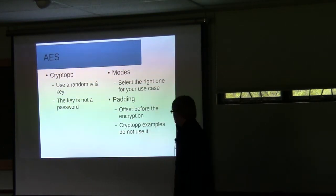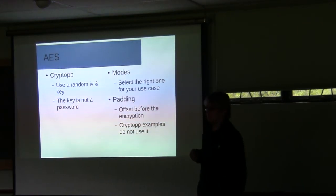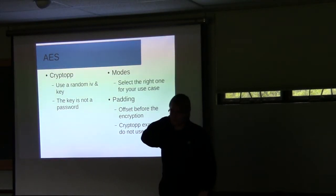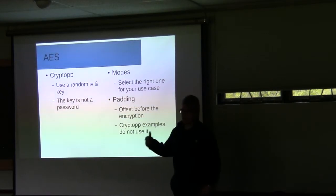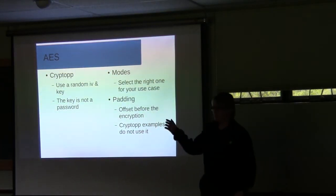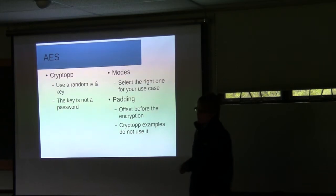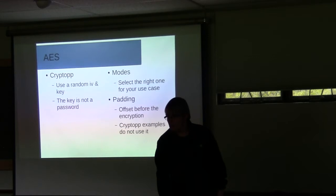Another important problem is that AES as a block cipher can have padding problems, and there are known attacks against padding. This basically means that sometimes a certain padding offset is added in front of your encrypted data. I find it interesting that the CryptoPP examples do not use padding, but CryptoPP does support it.